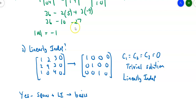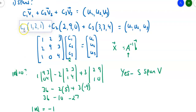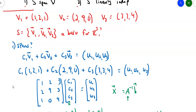What's my final answer? Yes — it spans and is linearly independent, therefore it's a basis. So as weird as this sounds, I can write any vector in R3 as a linear combination of those three vectors I started with — (1,2,1), (2,9,0), (3,3,4). Those are not a standard basis, but it is possible to write anything in R3 as a linear combination of those vectors.